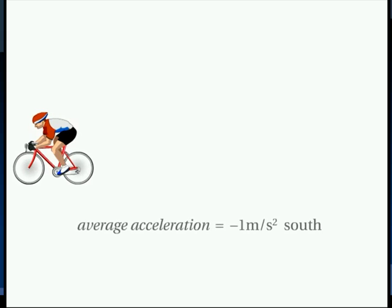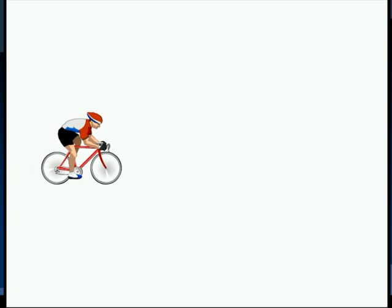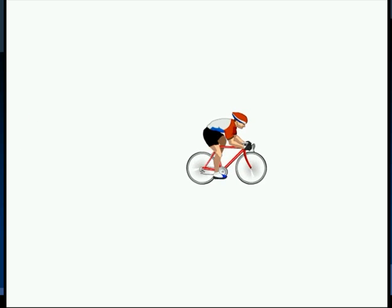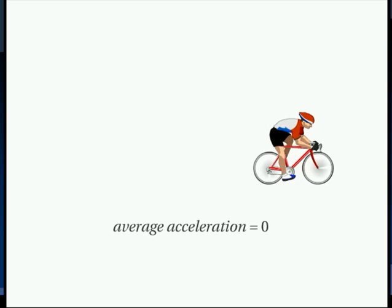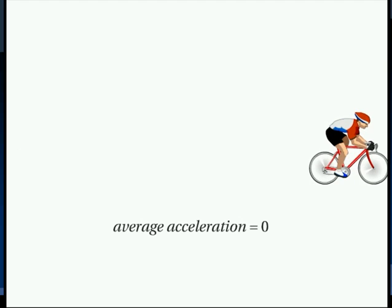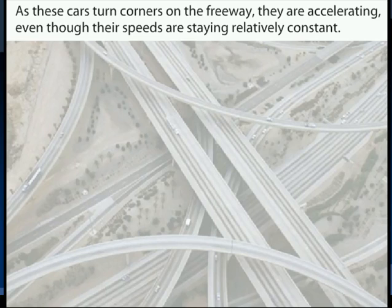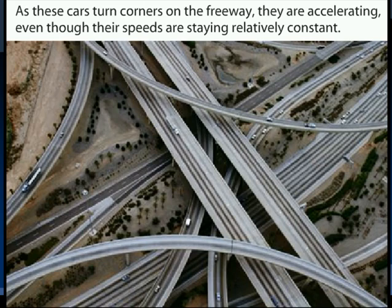If an object slows down and is traveling in a positive direction, the change in velocity is a negative value, so its acceleration will also be a negative value. If an object has a negative velocity — such as when a bicyclist heads in the opposite direction and is accelerating in that direction — the acceleration will also be negative, even though the bicycle is speeding up. If there is no change in an object's velocity, its velocity is constant and its acceleration is zero. If an object has constant speed but changes direction, then its velocity is changing and it is accelerating.